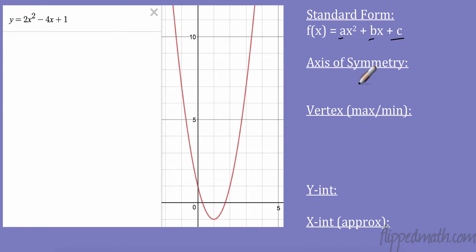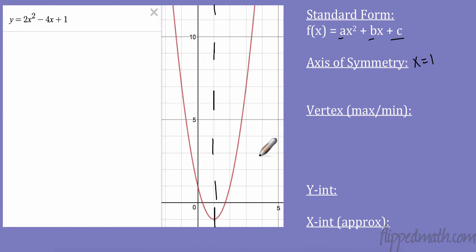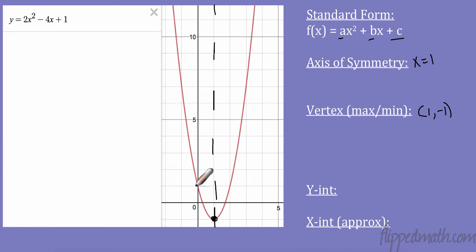Let's talk about the axis of symmetry. We have this graph right here, and it's pretty easy to see that the axis of symmetry is x equals positive 1. But we need to be able to graph these. Once we have our vertex, we should be able to graph it. Our vertex is over 1, down 1 — so positive 1, negative 1. Our y-intercept is positive 1, because when x is 0, it's 1. We can also find that from our equation: 0 squared times 2 minus 0 cancels, leaving 1.